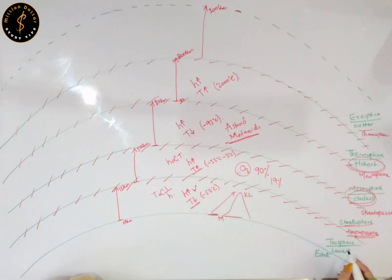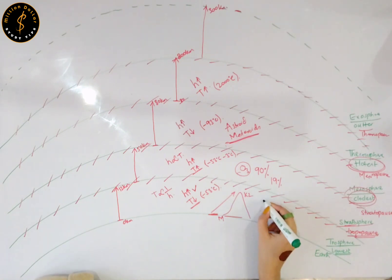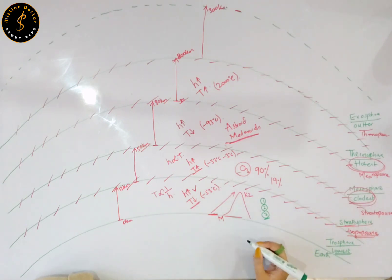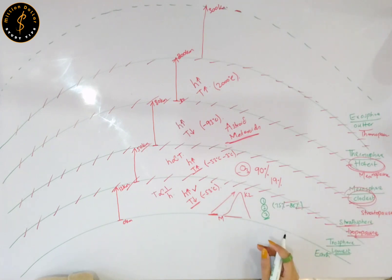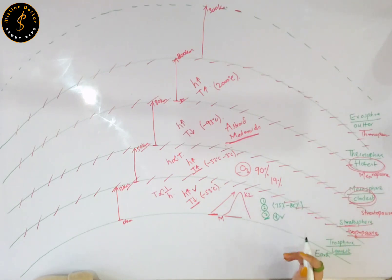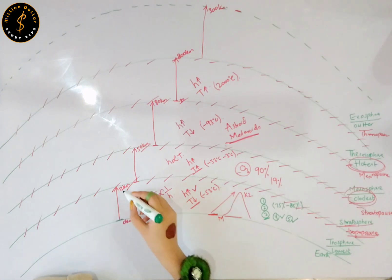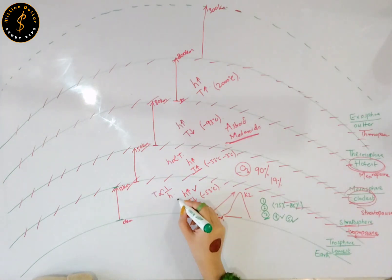Your troposphere is the lowest layer of your planet Earth. In the troposphere, animals and plants live. Your buildings and mountains exist in your troposphere. It contains about 75 to 80% of the total mass of your planet Earth. Aeroplanes also fly in the troposphere. Moreover, your weather occurs in the troposphere — your cloud formation is done in your troposphere. The troposphere starts from zero kilometers and goes up to 12 kilometers, and the temperature decreases with the increase in height.